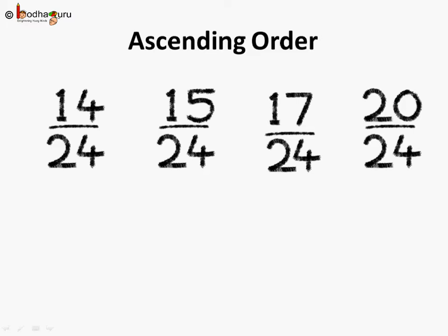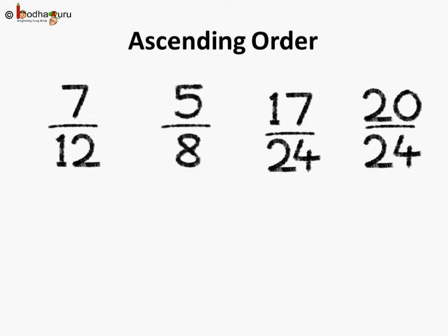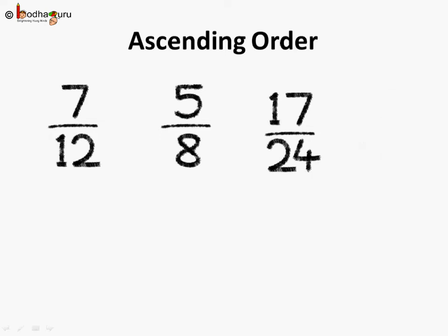Now, we will replace them with their equivalent fractions, that is the original ones. So, 14 by 24 becomes 7 by 12, and 15 by 24 becomes 5 by 8, and 17 by 24 was the original fraction. So, we replace 20 by 24 with 5 by 6. So, here we get the fractions in ascending order.